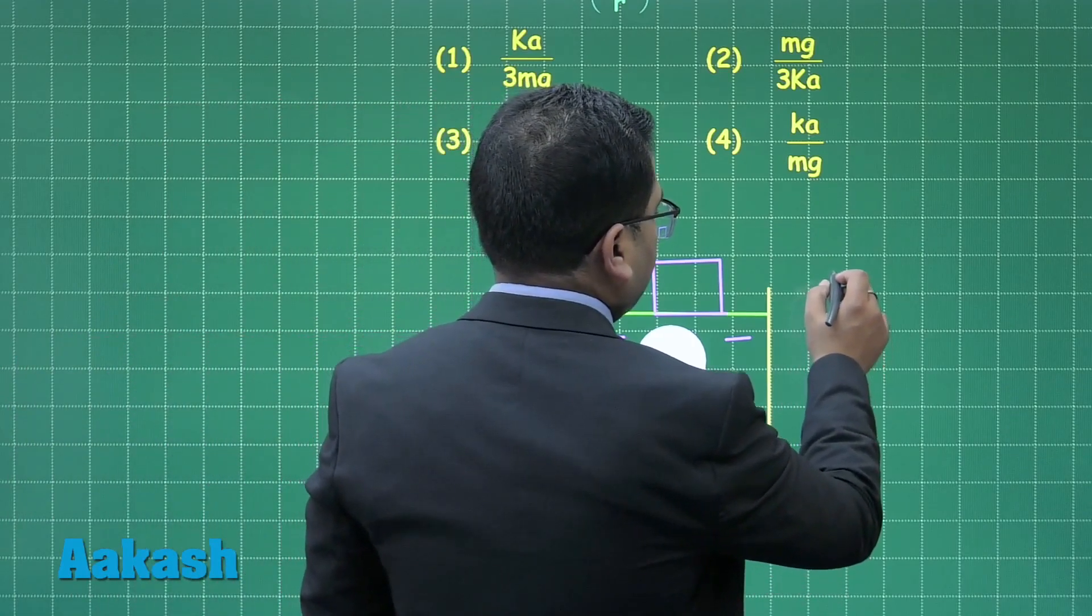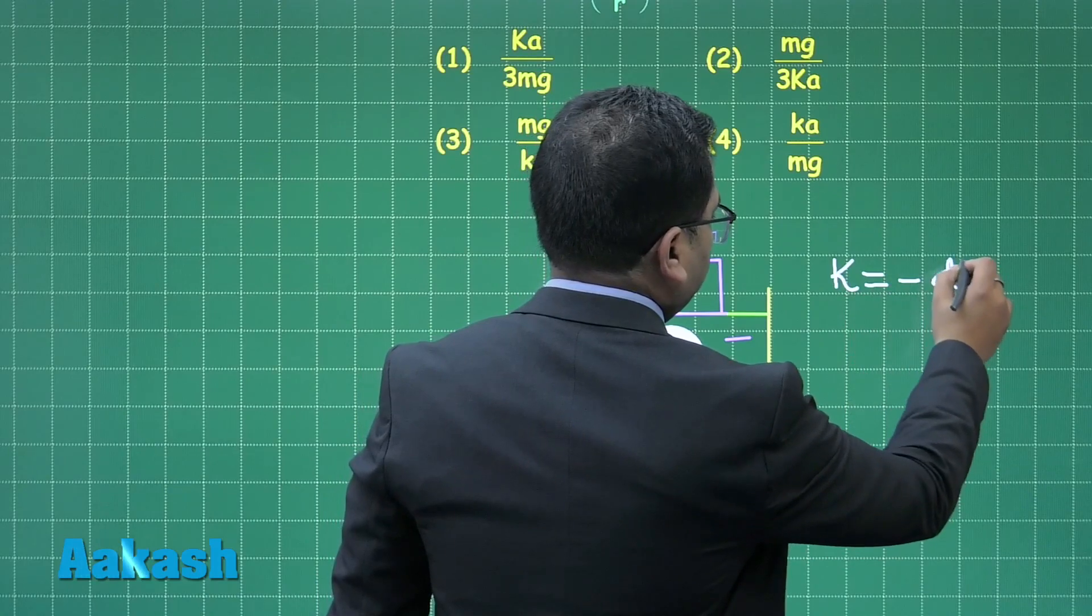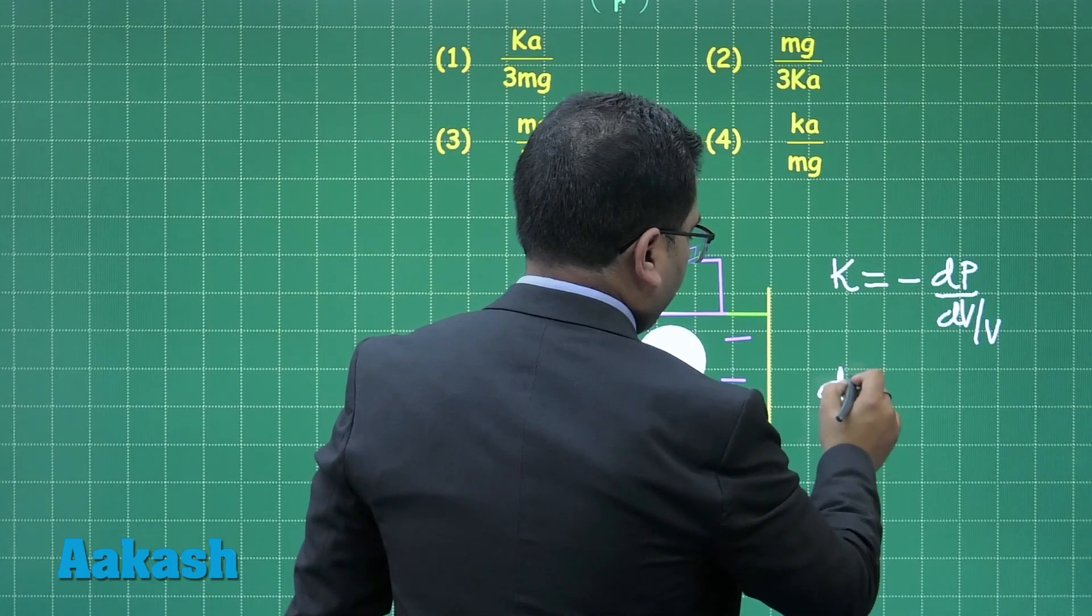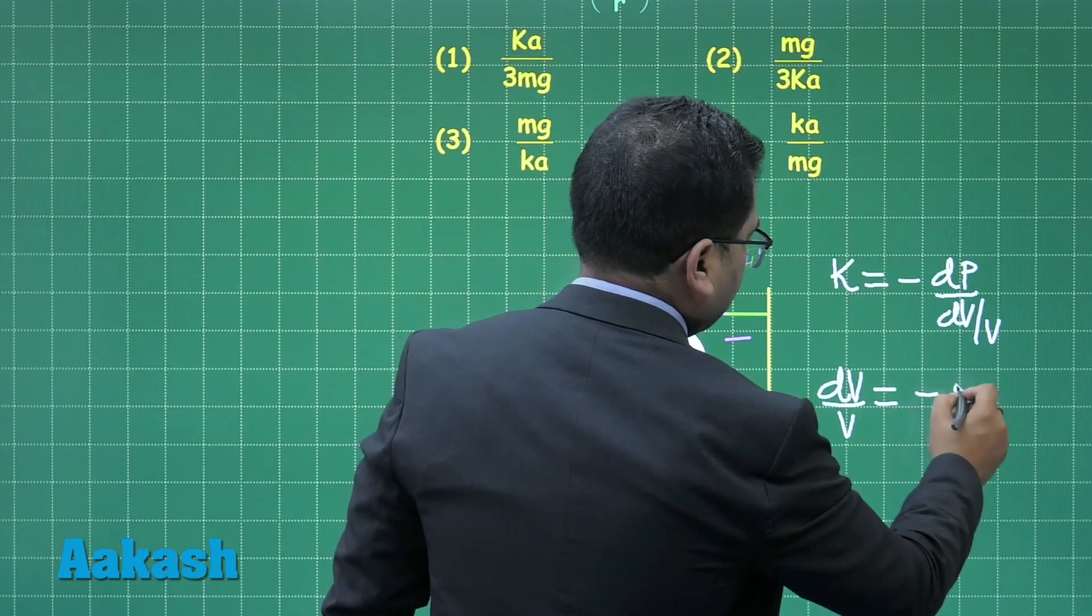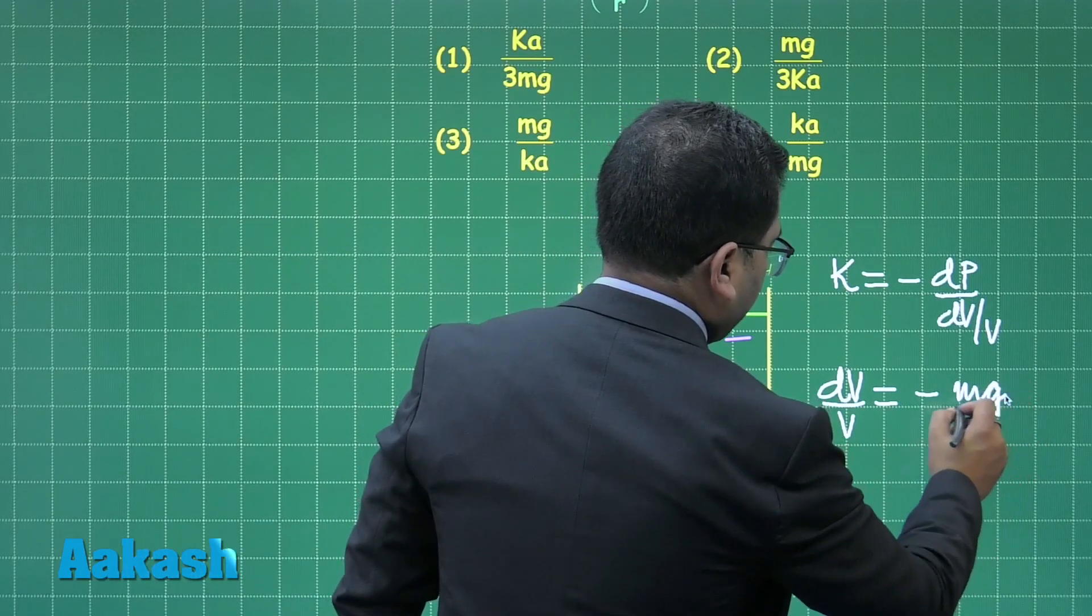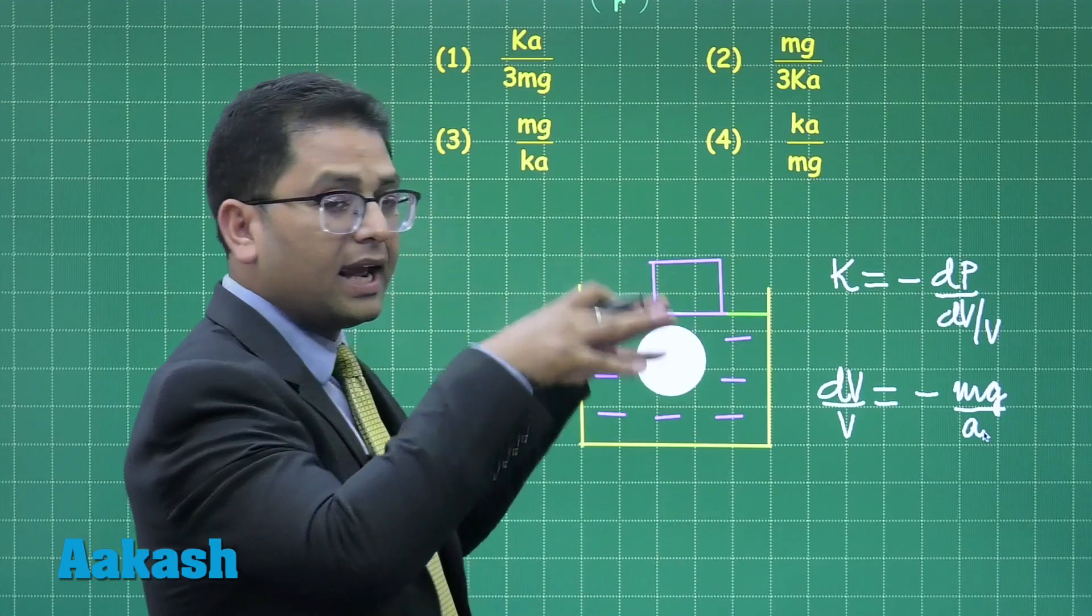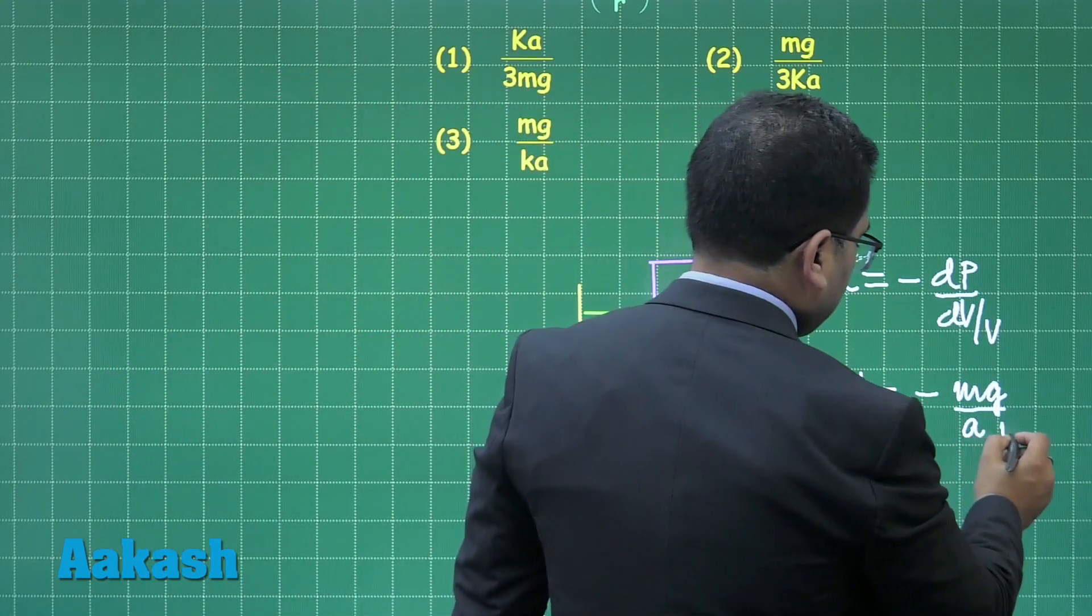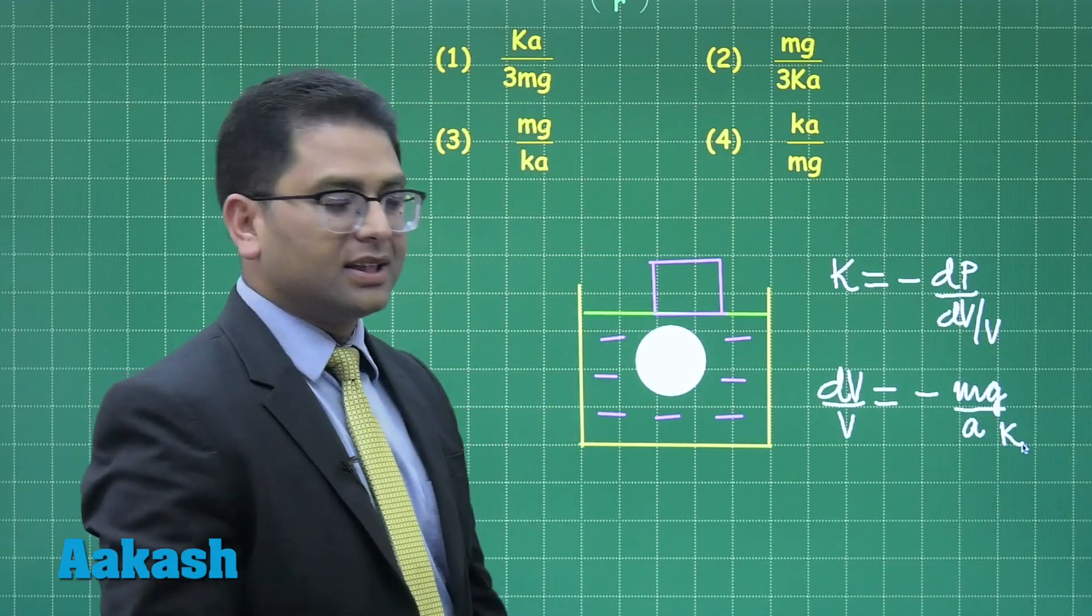Bulk modulus is K = -dp/(dv/v), and what I get is the fractional change in volume is -mg/K. The weight of the block has increased the pressure, so force per unit area and K. This is the fractional change in volume.